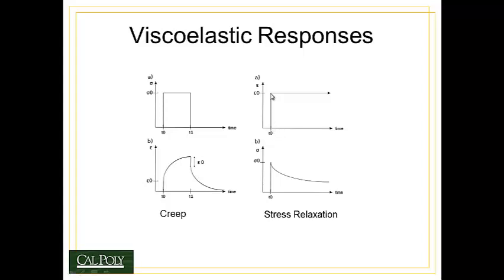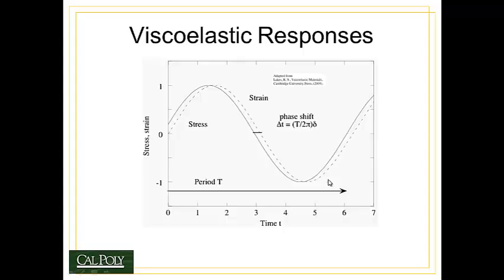Another type of response is called the stress relaxation response. In this case, a fixed strain is applied — the material is stretched a fixed amount — and that strain is held for an indefinite period of time. During that time, the stress in the material is actually reduced as the chains align themselves relative to the applied stress axis. This is called stress relaxation.